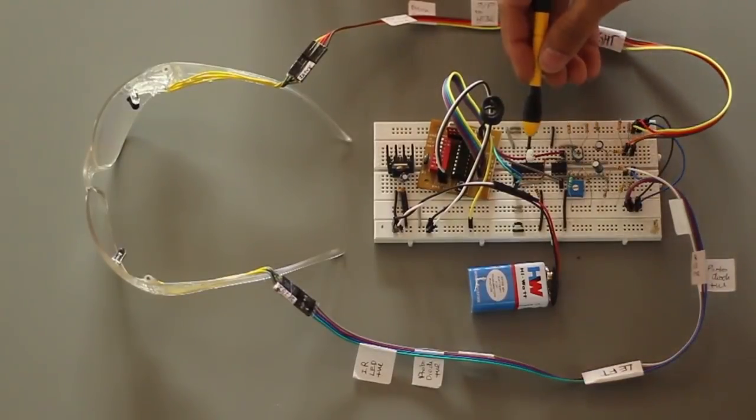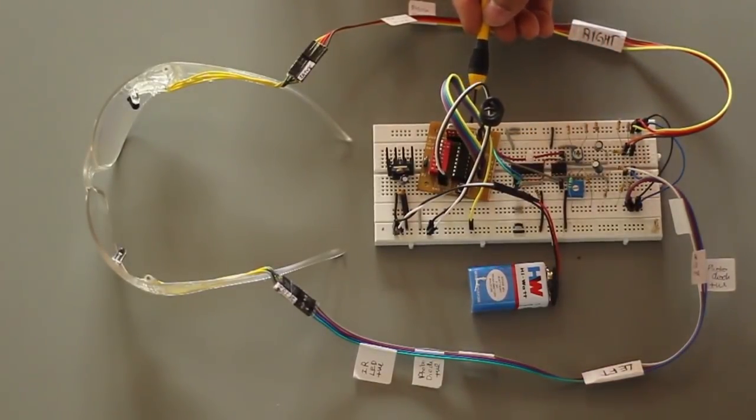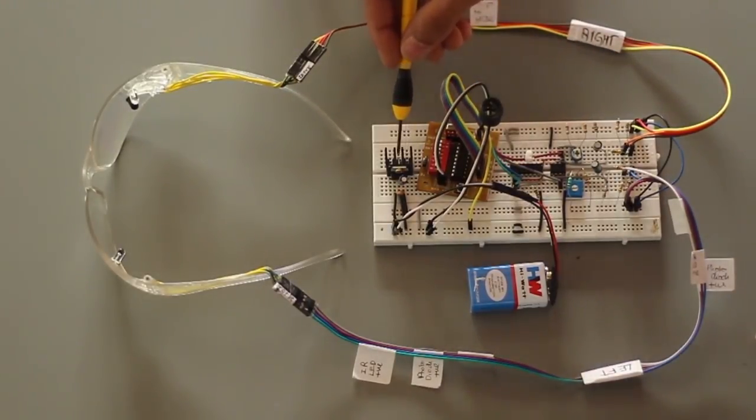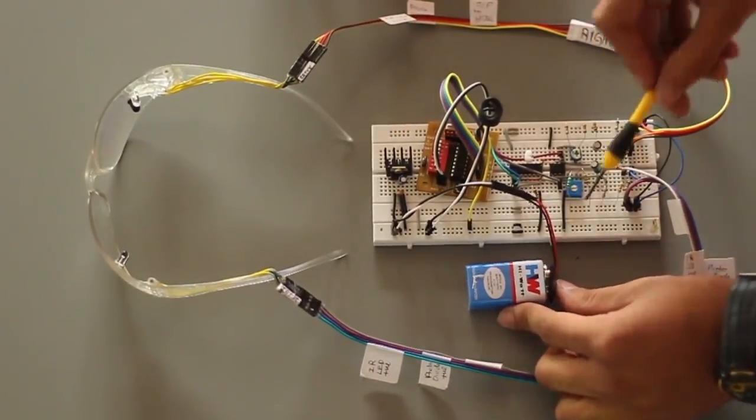The output goes to an AND gate which then goes to an encoder and to the transmitter. The LEDs are powered by 5V and the rest of the circuit is powered by this 9V battery.